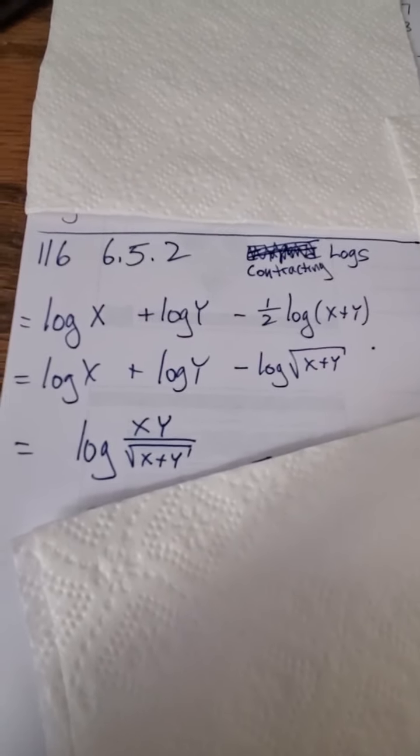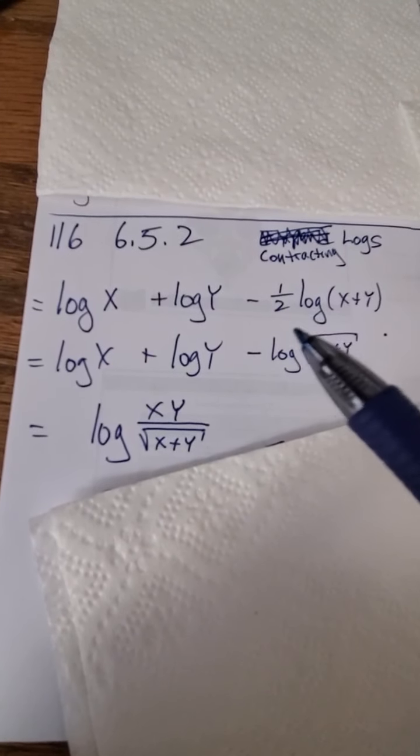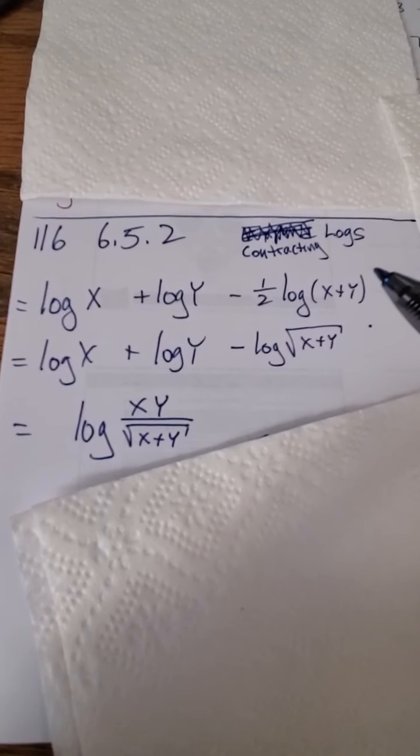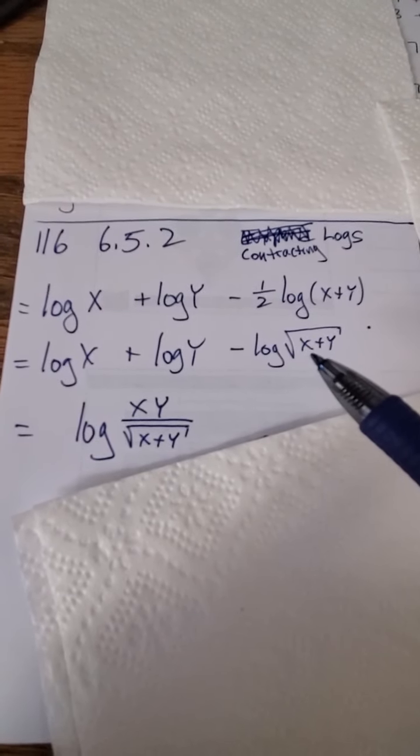So here's what I'm going to do. First of all, the one-half here, that could become an exponent, which I'm taking x plus y to the one-half power, but that's the same thing as the square root of x plus y.